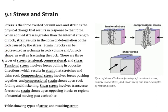There are three types of stress: tensional, compressional, and shear. Tensional stress involves forces pulling in opposite directions, which results in strain that stretches and thins rock. Compressional stress involves forces pushing together, and compressional strain shows up as rock folding and thickening. Shear stress involves transverse forces, and the strain shows up as opposing blocks or regions of material moving past each other.